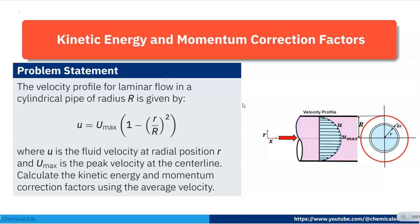The velocity profile for laminar flow in a cylindrical pipe of radius capital R is given by u = u_max × (1 − (r/R)²), where u is the fluid velocity at radial position r and u_max is the peak velocity at the centerline, or maximum velocity at the centerline.